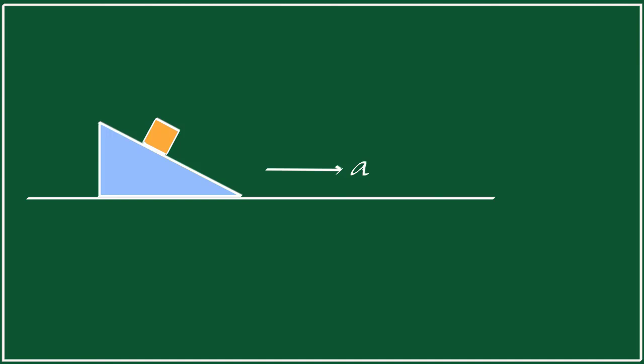The question is, to what acceleration should this wedge be subjected so that the block does not slide down the incline? The angle of the wedge is theta. Here, the mass of the block is m and there is no friction between the block and the wedge.